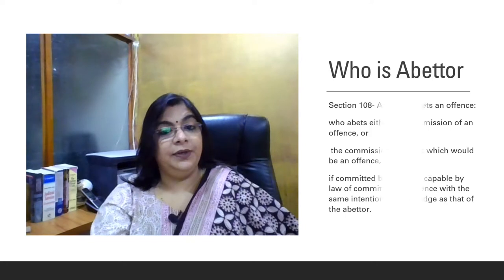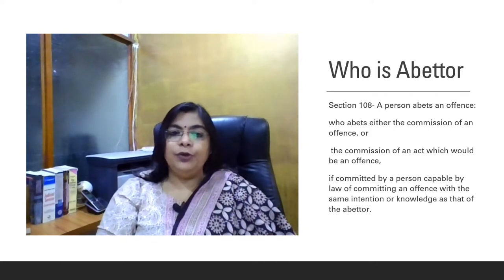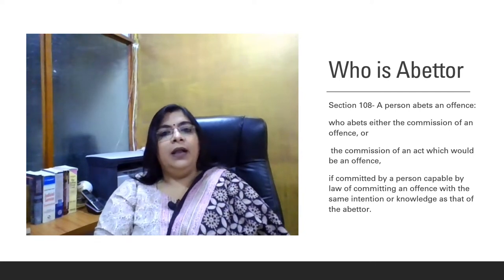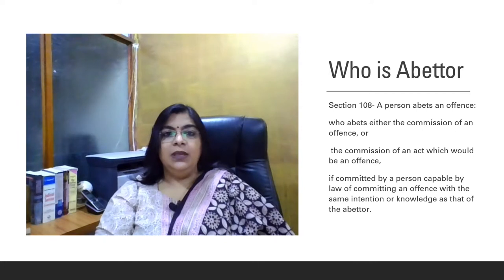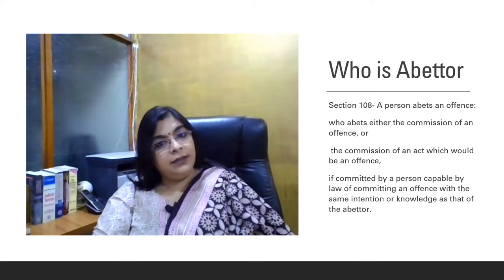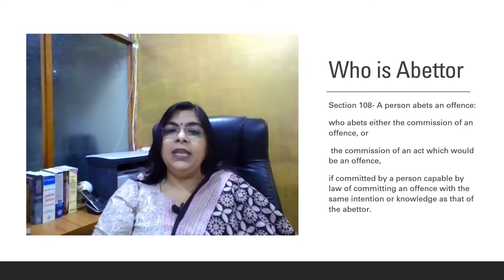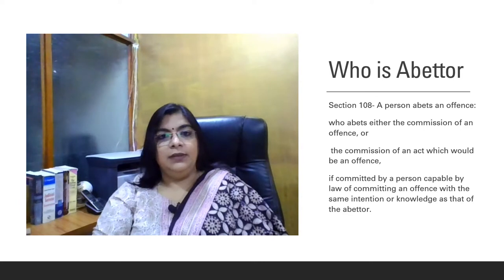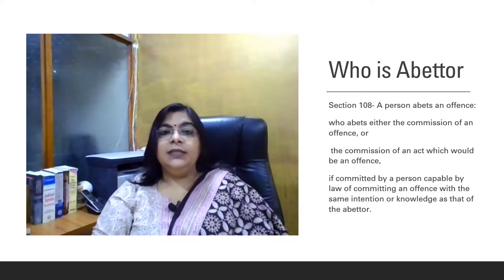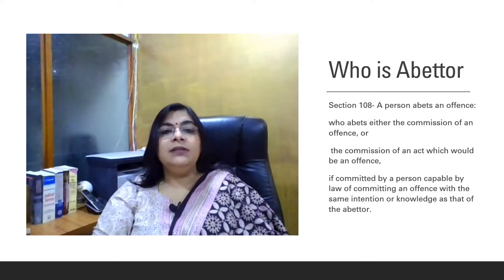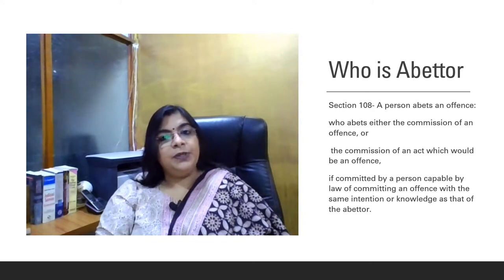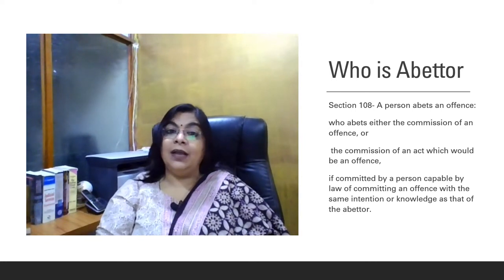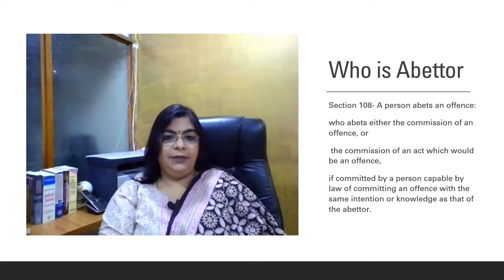Let's understand who is abettor. Abettor has been described under section 108 of IPC. Abetment under section 107 of IPC says that if any person is abetting another person for the commission or omission of any unlawful act, that comes under the category of abetment. Abetment can be of three levels: first, abetment by instigation; second, abetment by conspiracy; and third, abetment by aiding. If any person is abetting another person for any illegal or unlawful act, that person is called an abettor under section 108 of IPC.